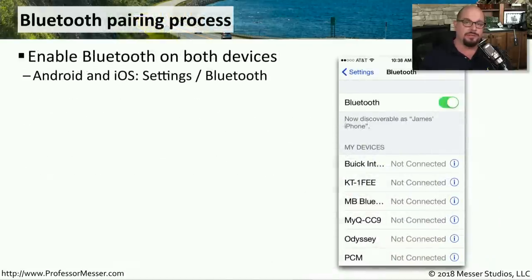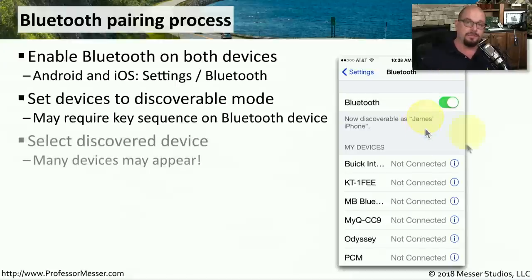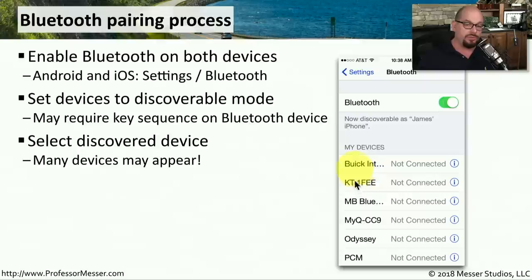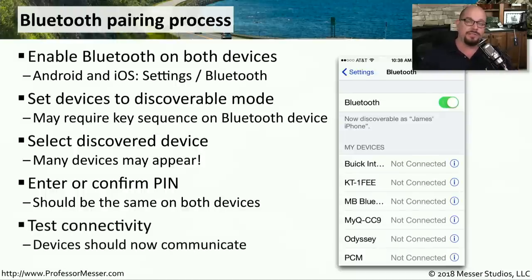The pairing process is relatively straightforward. You would first enable Bluetooth on your smartphone and on the device you would like to pair with. Then you would put those devices in discoverable mode, and you should see the devices show up on your screen. Usually the name of a discovered device will appear on the other Bluetooth device so that you know you're choosing the right one. You would then choose the name of the device you want to connect to, and usually a PIN will appear on both sides so you can confirm you've selected the correct device. Once you've confirmed the PIN, you choose to connect, and the devices are paired.